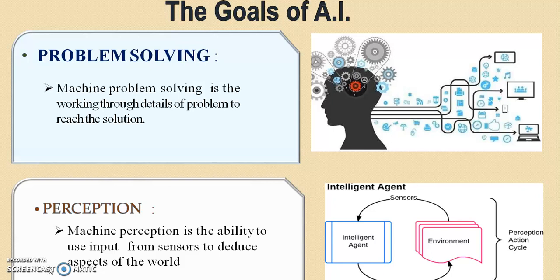The next goal is perception. Machine perception is the ability to use input from sensors to deduce aspects of the environment. The machine takes input through sensors, and the intelligent agent should act as an actuator to do something towards the environment. Through its sensors, the machine can sense things, apply intelligence, and react according to the environment.